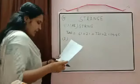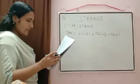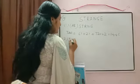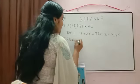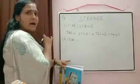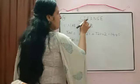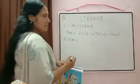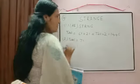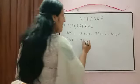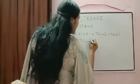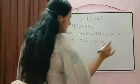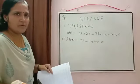Second condition: vowels never come together. Total arrangements of all 7 letters = 7!. Subtract the case where all vowels are together (1440). Answer = 7! − 1440.